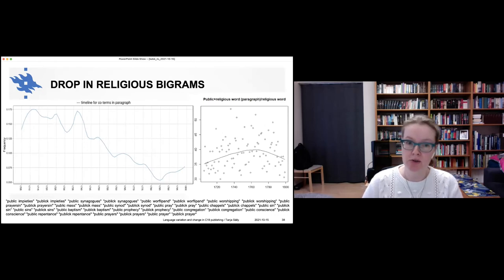And what's really clear also is a drop in religious bigrams of public. So I don't know, there's things like public impieties, public synagogues, public worship, public prayers, public mass and so on. People just don't use that anymore so much. And it's not just that religious discourse as a whole kind of goes away. So apparently the graph on the right kind of shows that there is no sort of clear relationship between the use of public in religious bigrams and religious words as a whole. So this is something that actually happens and is not just the function of the fact that people talk less about religion as a whole.